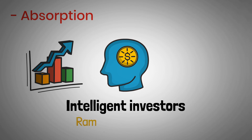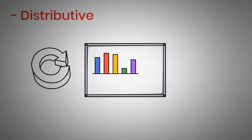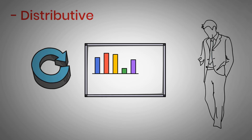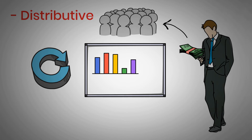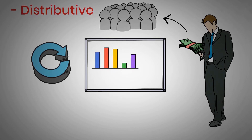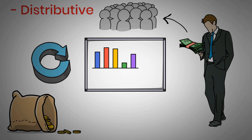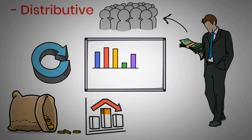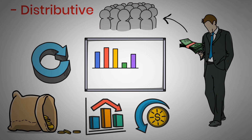The absorption process leads to rampant speculation. The last phase is distributive, which changes the complete outlook of the market. Smart investors start selling their assets to the public as the upward trend has gone speculative. The limited supply of the asset makes the price retrace, which lowers the value and its volume.